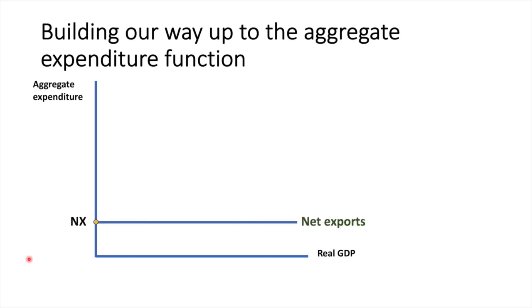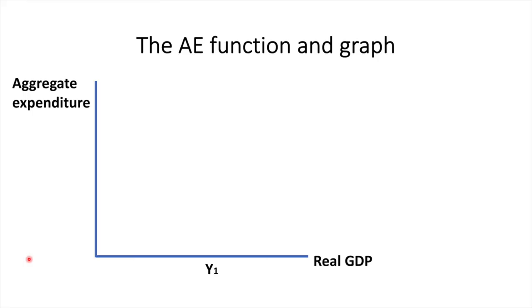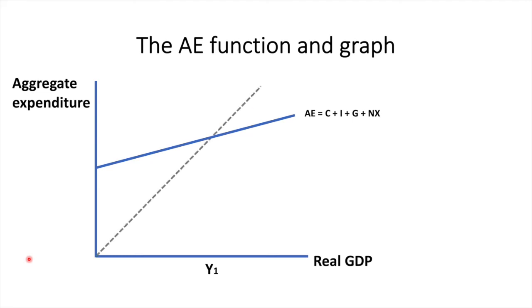Next we put all four components together. The y-intercept of the aggregate expenditure function is the sum of all its components when income is zero. The line is upward sloping with a slope of less than 1, taking its slope from the consumption function's marginal propensity to consume. The 45-degree line represents all points along which aggregate expenditure and real GDP would be equal. The intersection point of the aggregate expenditure function and the 45-degree line represents equilibrium, which in this example occurs at Y1. This does not necessarily correspond to full employment equilibrium. We'll explore the diagram in much greater detail in the next video on income determination.